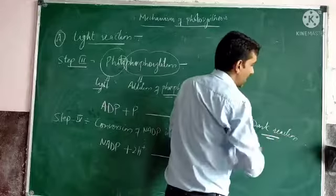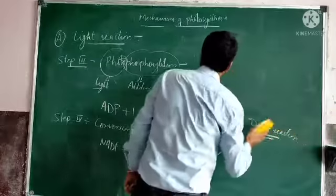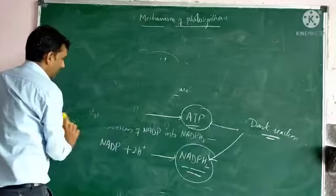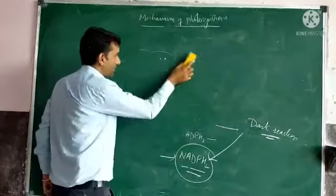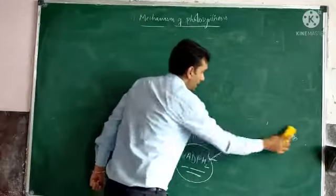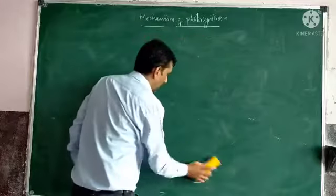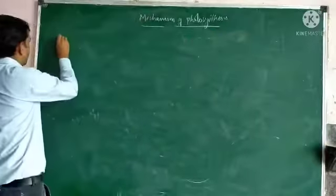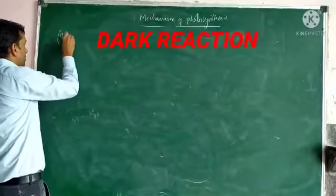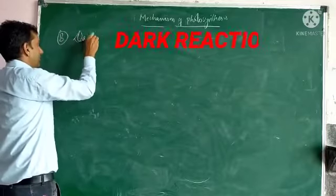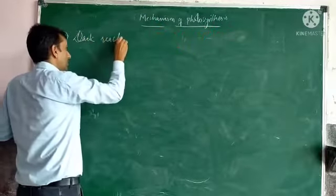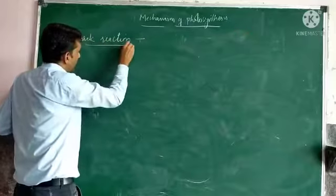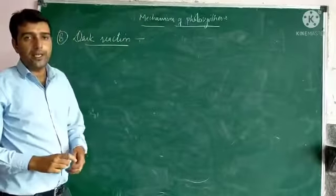Now let's discuss the mechanism of the dark reaction. The dark reaction occurs in the stroma of the chloroplast. These are also called light-independent reactions because there is no need for light.